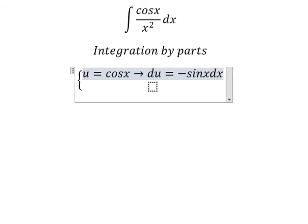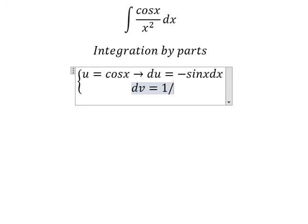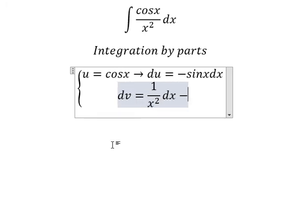For dv, we have 1 over x squared dx. The integral of this gives us v equals negative 1 over x.